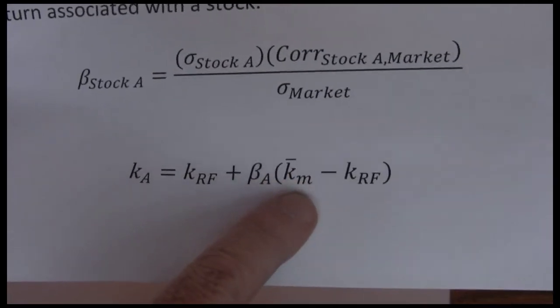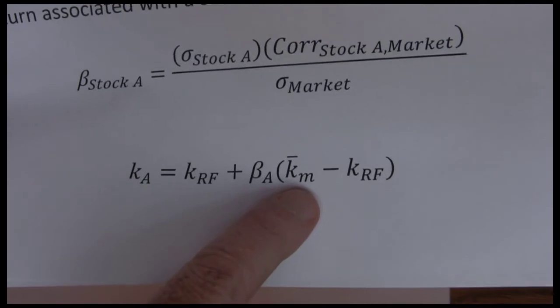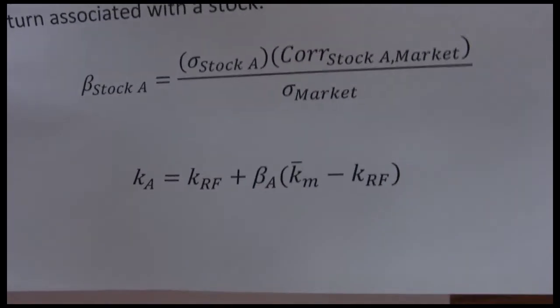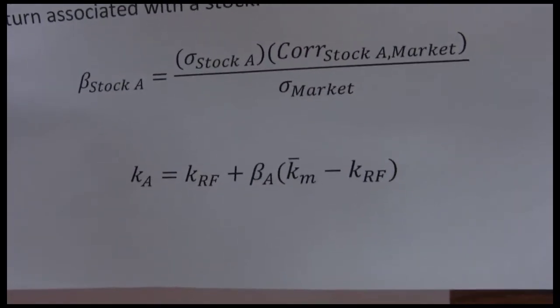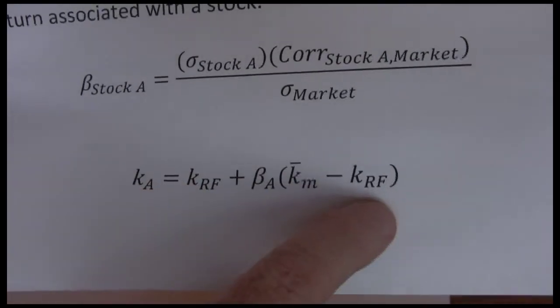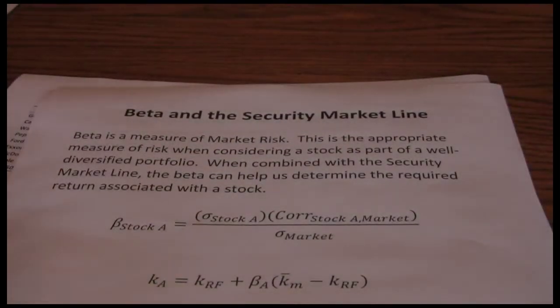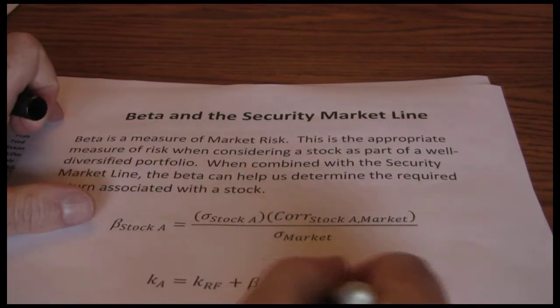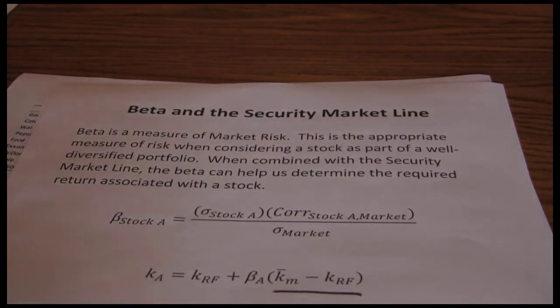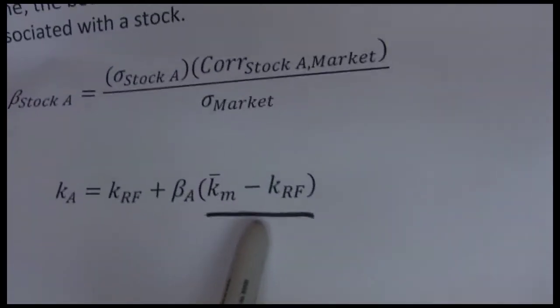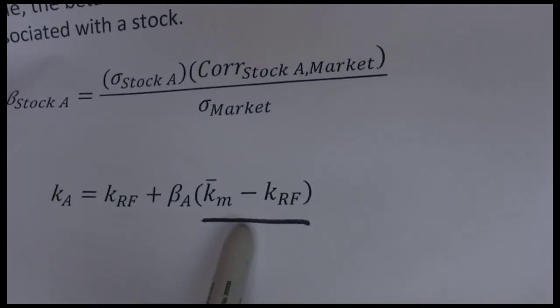This K bar sub M is the expected return on the market, the rate of return that we think the average stock is going to earn minus the risk free rate. This portion here, this expected return on the market minus the risk free rate is often times referred to as the risk premium.